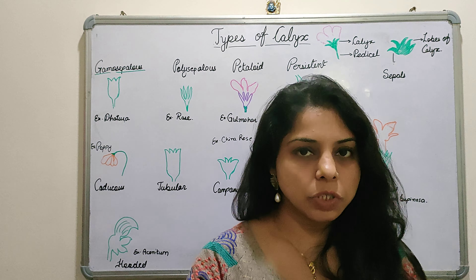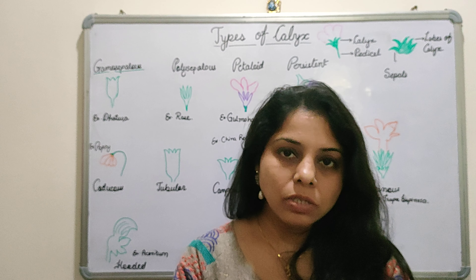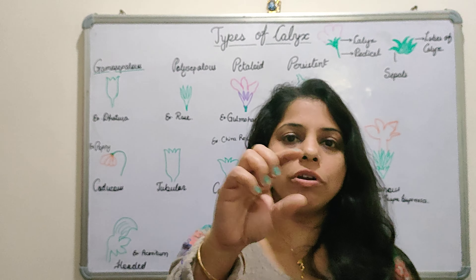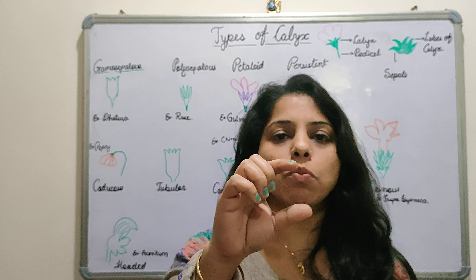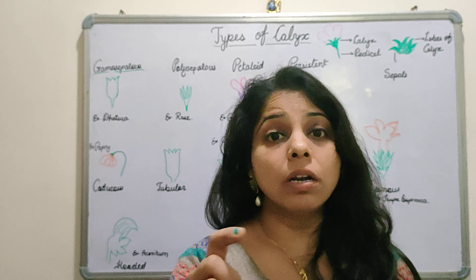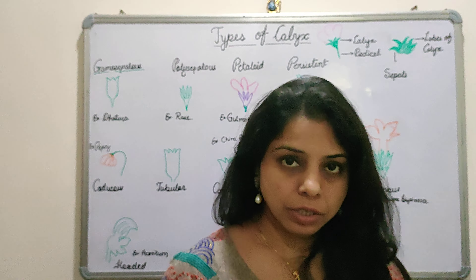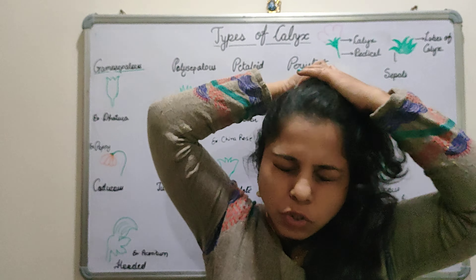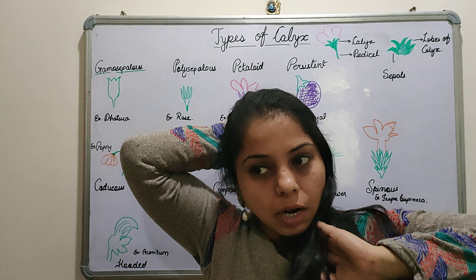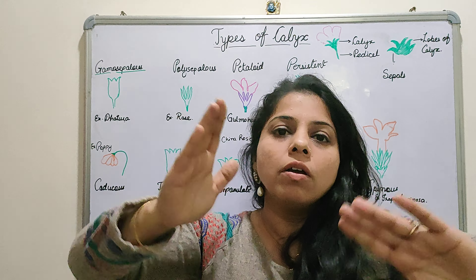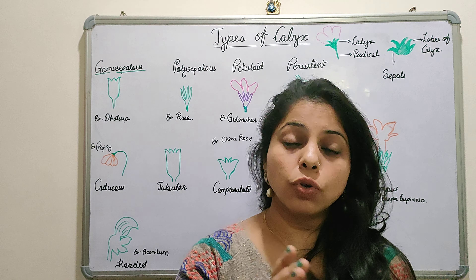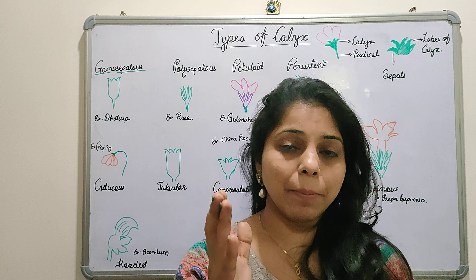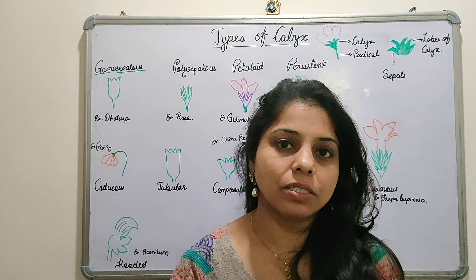Perianth. Perianth is the term commonly used for both calyx and corolla together, because they are the outermost whorls. Androecium and Gynoecium are the most important parts for reproduction in plants, especially in angiosperms. So 'perianth' is what we use for corolla and calyx together.